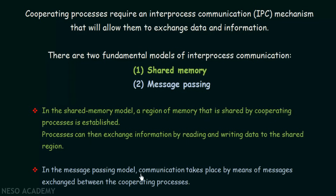In the message passing model, communication takes place by means of messages exchanged between the cooperating processes. The communication between the processes takes place via messages which the processes exchange between each other. These messages are exchanged between processes and that is how the communication takes place in the message passing model.